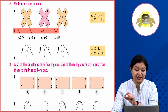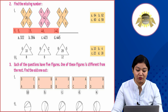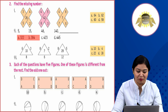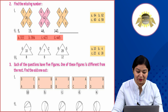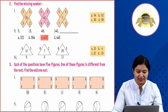A series of four numbers is given, and options are provided asking what comes last — what number comes after 140. Option A is 322, option B is 384, option C is 423, option D is 445. The next number in this series is option C, 423.